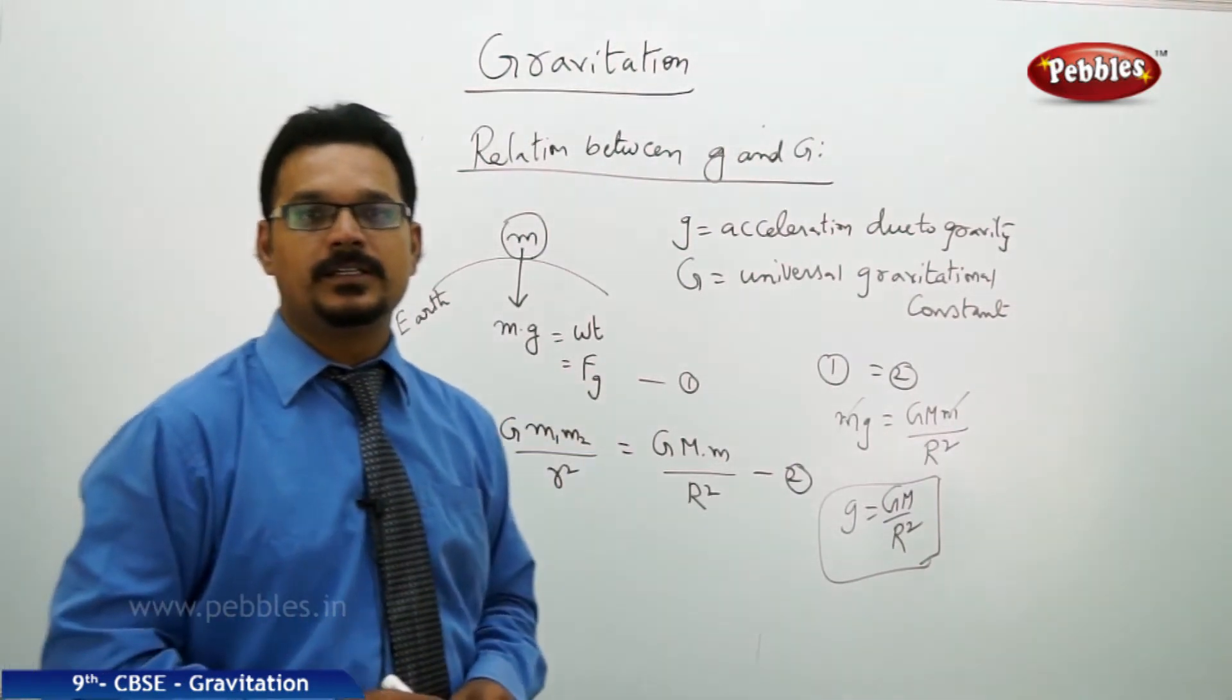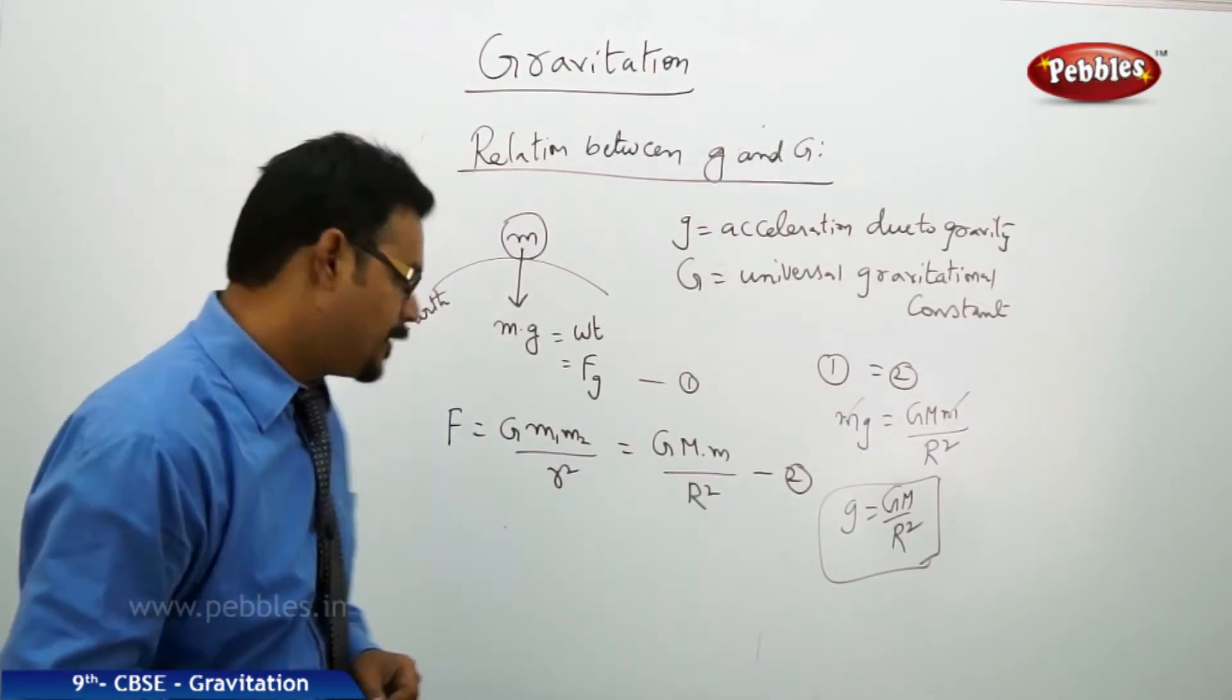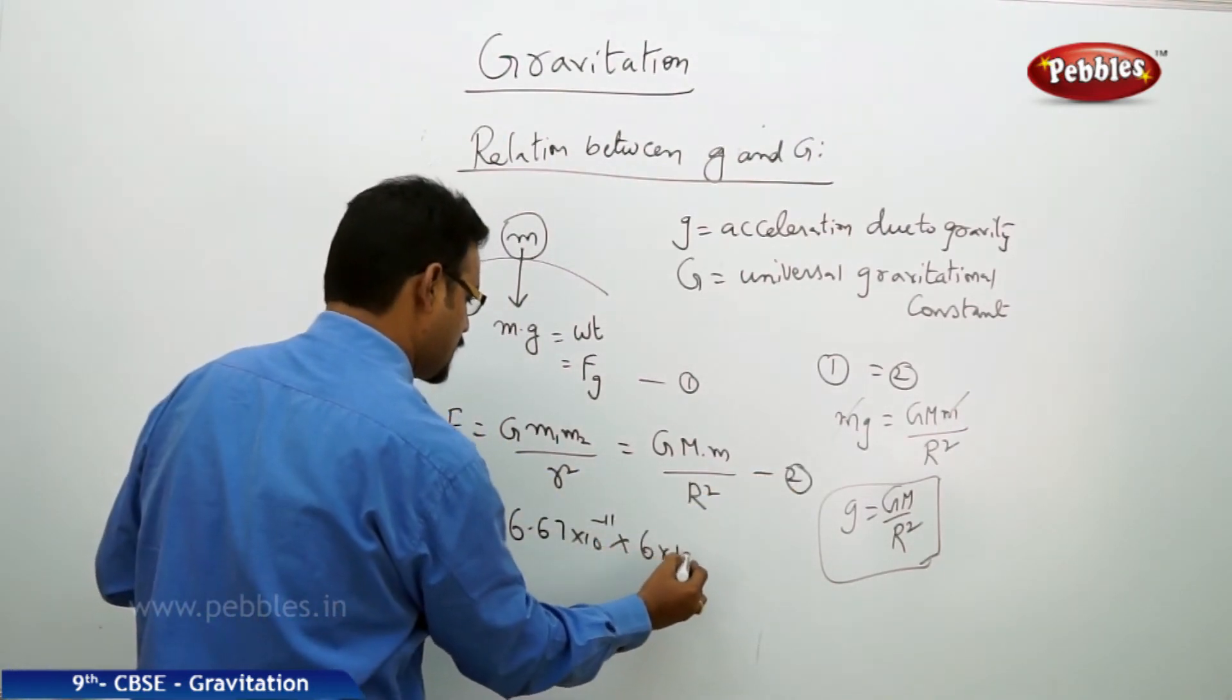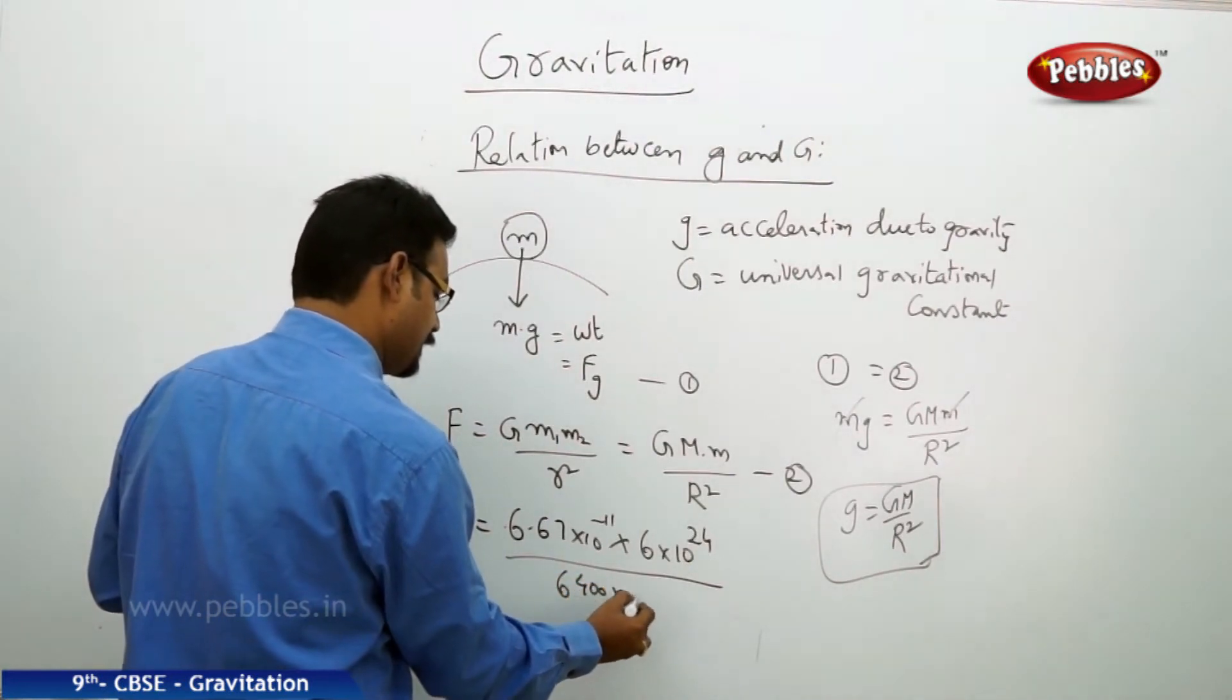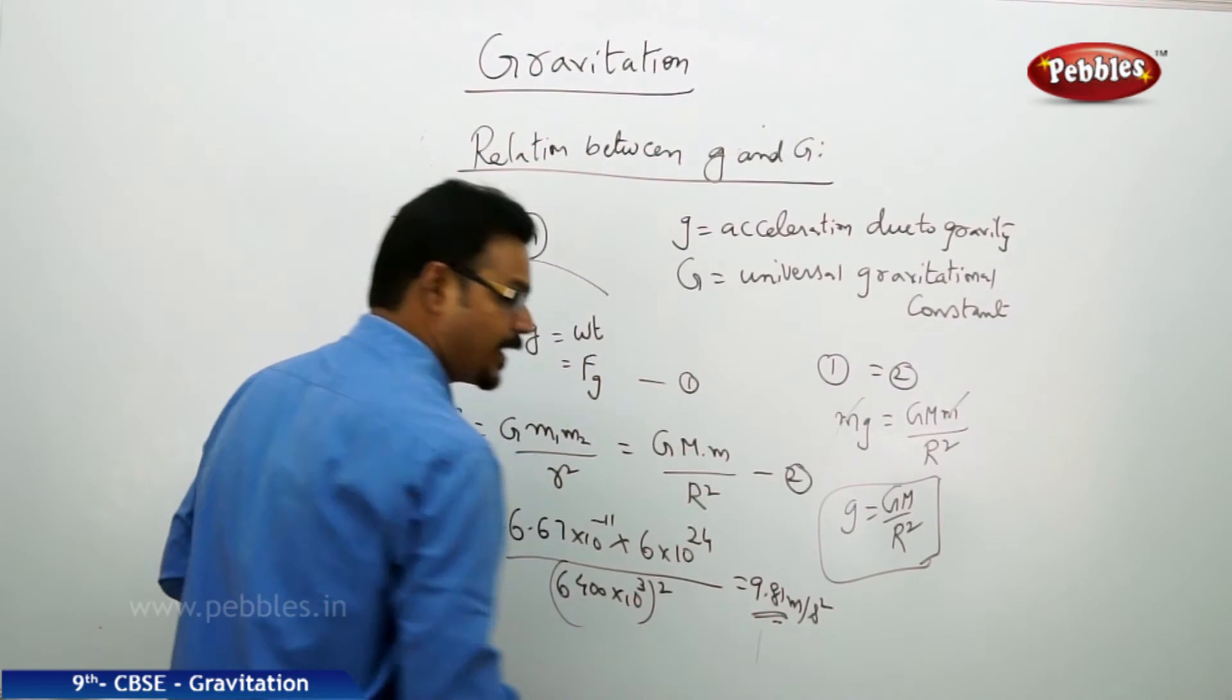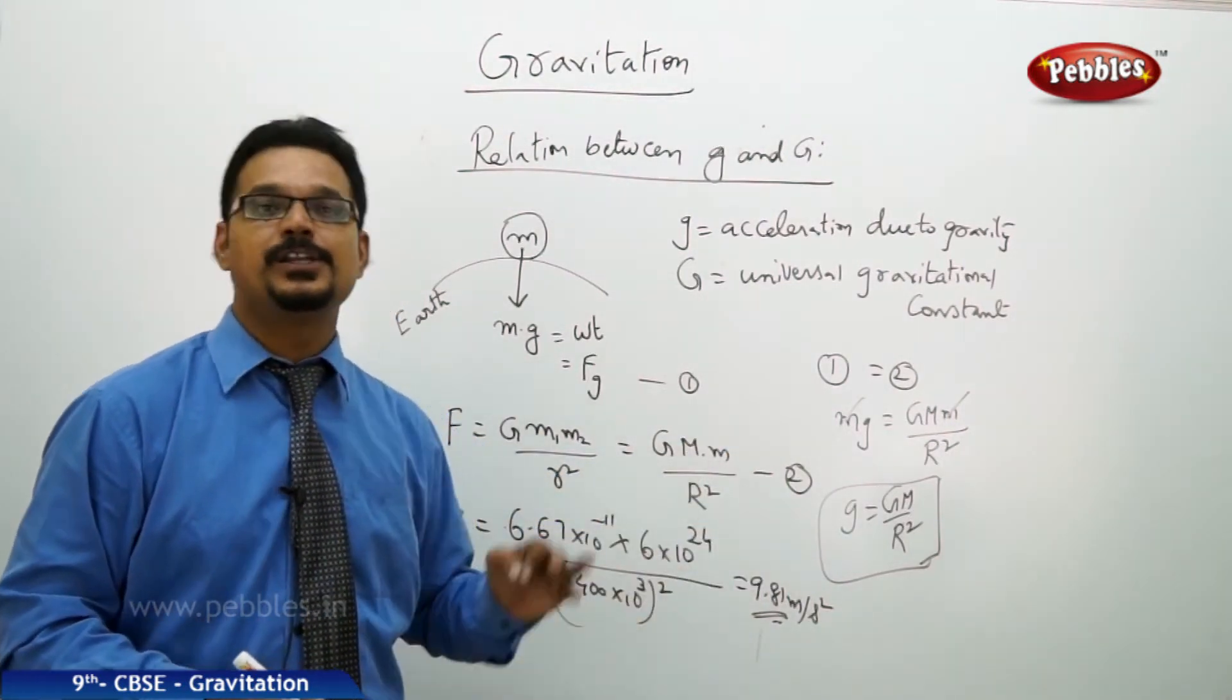All of us know that the g value is 9.8 meters per second square. Now let us reprove that g is 9.8 meters per second square using this formula. See, small g equal to capital G value, just now we have learned 6.67 into 10 power minus 11, into capital M mass of the earth, it is approximately 6 into 10 power of 24, by r radius of the earth. Radius of the earth is 6400 kilometers whole square. If you simplify this whole number and the fraction you will get 9.81 meters per second square, exact number 9.81. So this shows that what we found experimentally 9.81 meters per second square, we got the same value using this mathematical formula. Hence g equal to G M by r square is the correct relationship between small g and capital G.